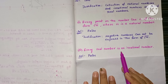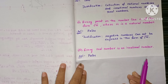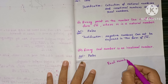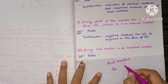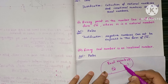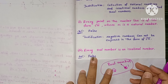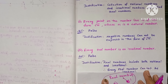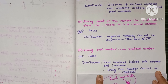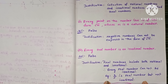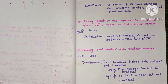Third statement: every real number is an irrational number. Real numbers include both rational and irrational numbers, so a real number need not be irrational — it may be rational also. The answer is FALSE. Justification: real numbers include both rational and irrational. For example, 2/5 is a real number but it is rational, not irrational.